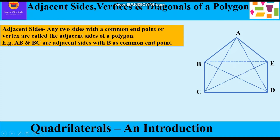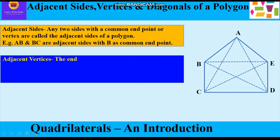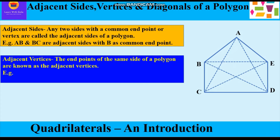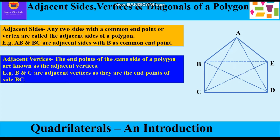Now, adjacent vertices: the end points of the same side of a polygon are known as adjacent vertices. For example, B and C are adjacent vertices as they are the end points of side BC. Similarly, C and D are adjacent vertices as they are the end points of side CD. Basically, adjacent vertices can be described as consecutive vertices, one after the other.